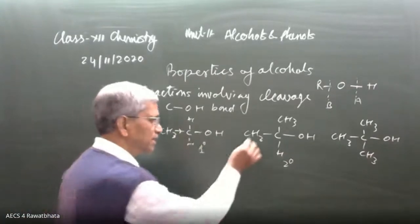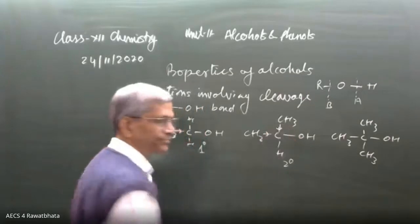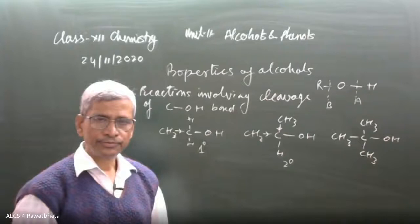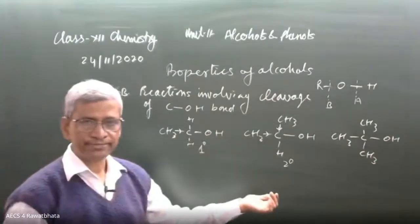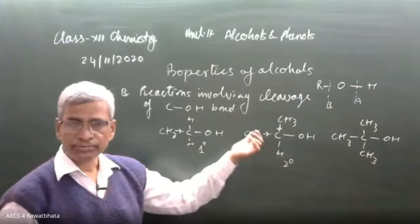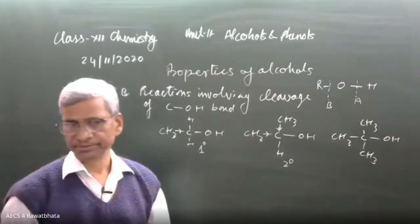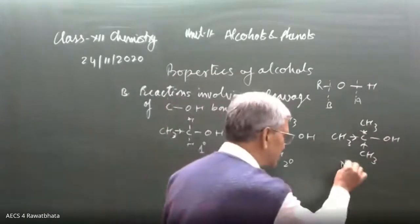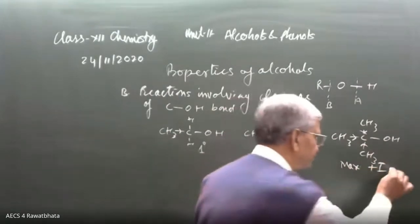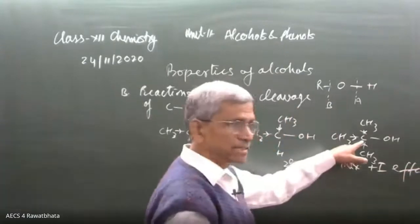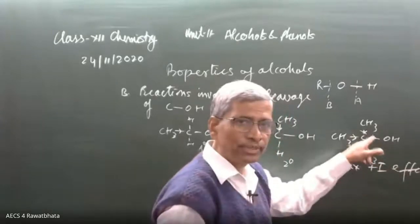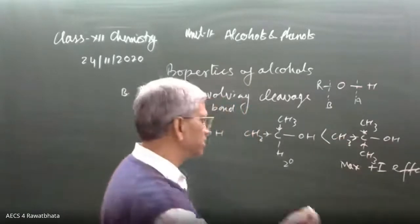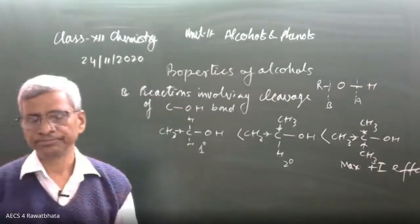Here the carbon has some electron density. In the case of two CH₃ groups, the electron density over that carbon is more than in the first case. With three CH₃ groups there is maximum +I effect, so this carbon has maximum electron density and OH comes out most easily. Therefore the order of reactivity is: 3° alcohol > 2° alcohol > 1° alcohol. This is the order of reactivity.